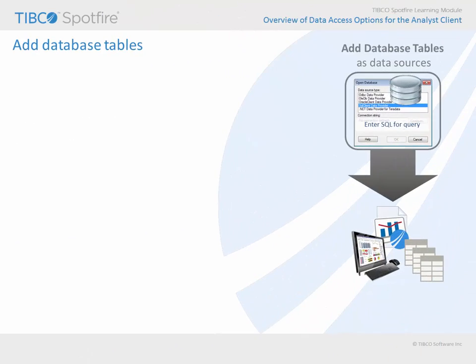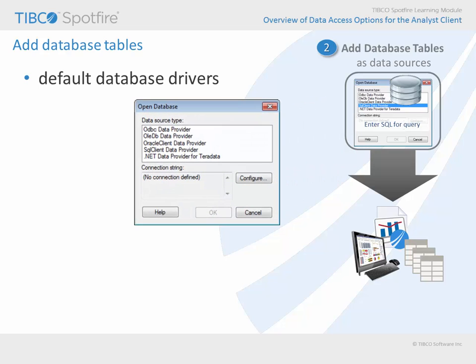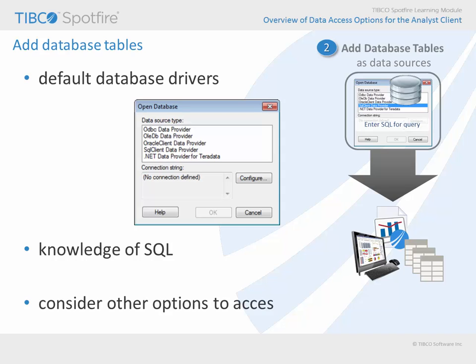A second way of accessing data for analysis is to add tables directly from databases. By default, Spotfire can open data source types using several common database drivers. In addition, other data sources may be available depending upon your installed data providers. Note, though, that the use of this approach may require that you write a SQL statement if you wish to limit data which is made available for analysis. In addition, this is generally not the recommended approach for gaining access to database data. Information links and data connections tend to be more robust options for analyzing database data, but we'll talk more about these options in a moment.